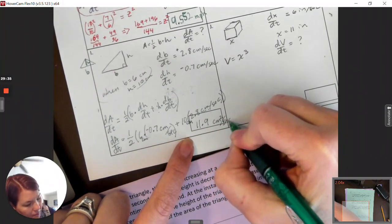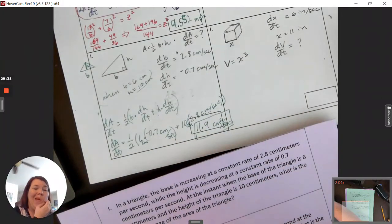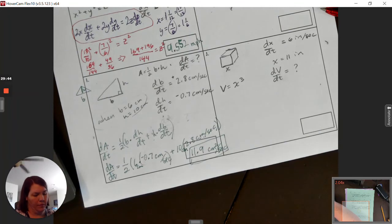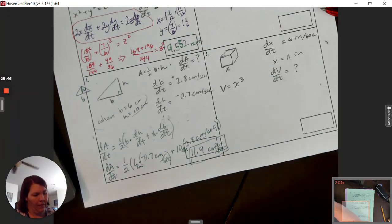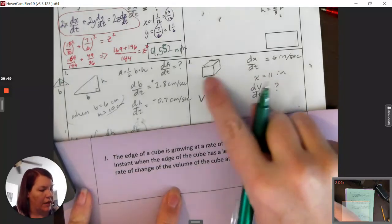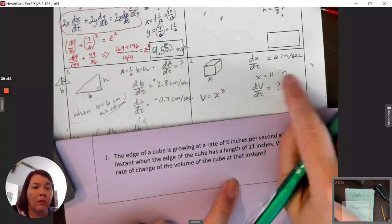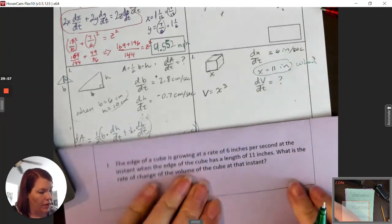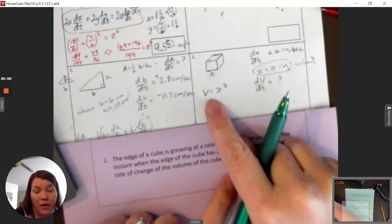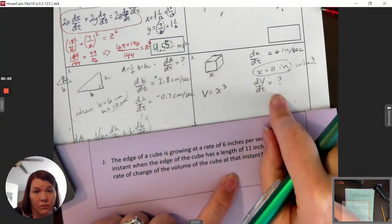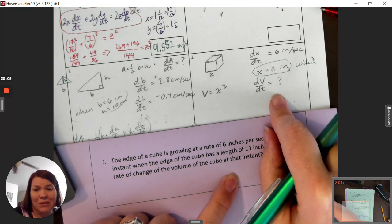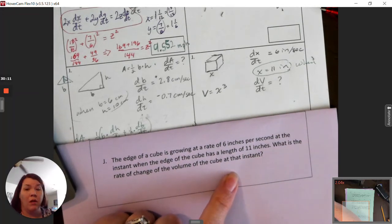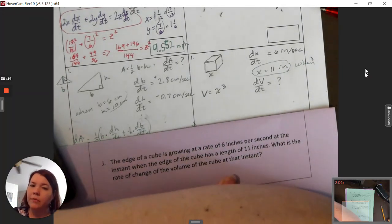And the last one is actually one of the easiest on the whole worksheet. The edge of the cube is growing at a rate of 6 inches per second. So I just called edge x. 6 inches per second. x is 11 inches. That's our when. And again, we use that later. What is the rate of change of volume? So there's the formula for finding the volume of a cube. Oh, really? That one's really, really easy. I'm going to leave you to do it. It's really simple. It's easier than all of them. What a nice present at the end of the worksheet. So good luck. I hope you had a good time with these. And I will talk to you guys soon.